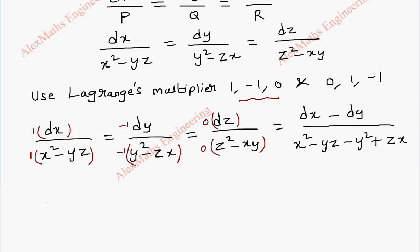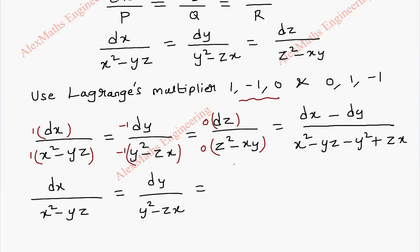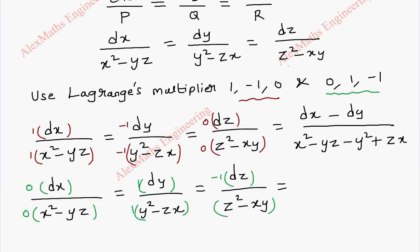Now using the second multiplier (0, 1, -1), we multiply 0 with the first term, 1 with the second term, and minus 1 with both numerator and denominator of the third term. Adding all numerators gives dy minus dz, and the denominator is y² minus zx, minus z² (with minus carried inside) giving plus xy.